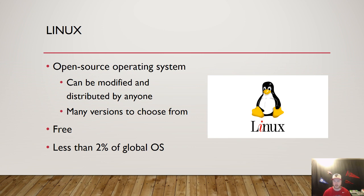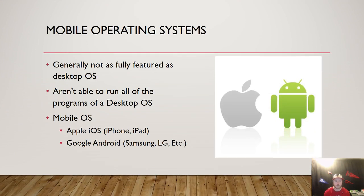Those are your top three most popular desktop operating systems. Now we're going to look at mobile devices. Mobile devices are generally not as full-featured as your desktop — for instance, if you have Microsoft Excel on your phone, it's a lot easier to use on your PC or Mac. That's because of all the different hardware components available on a desktop. It's a lot more difficult to run large applications on mobile devices, and they typically can't run all the programs a desktop operating system can, though they do have specialized programs that only run on mobile.